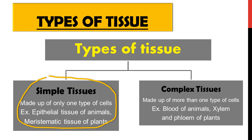Complex tissues are made up of more than one type of cell. Examples include blood of animals — containing WBCs, RBCs, and platelets — and xylem and phloem of plants. Xylem and phloem are the tissues of plants that transport water and food material throughout the plant. These are the two types of tissue: simple tissue and complex tissue.